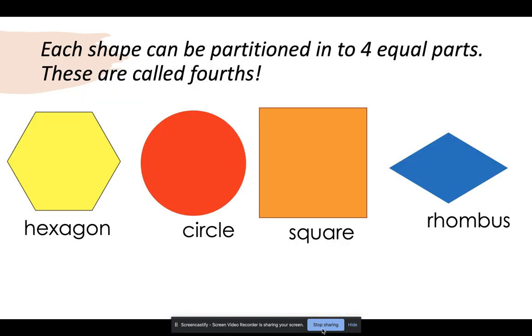Each shape can be partitioned into four equal parts. Those are called fourths. In order for the shapes to be called fourths, the parts have to be equal.